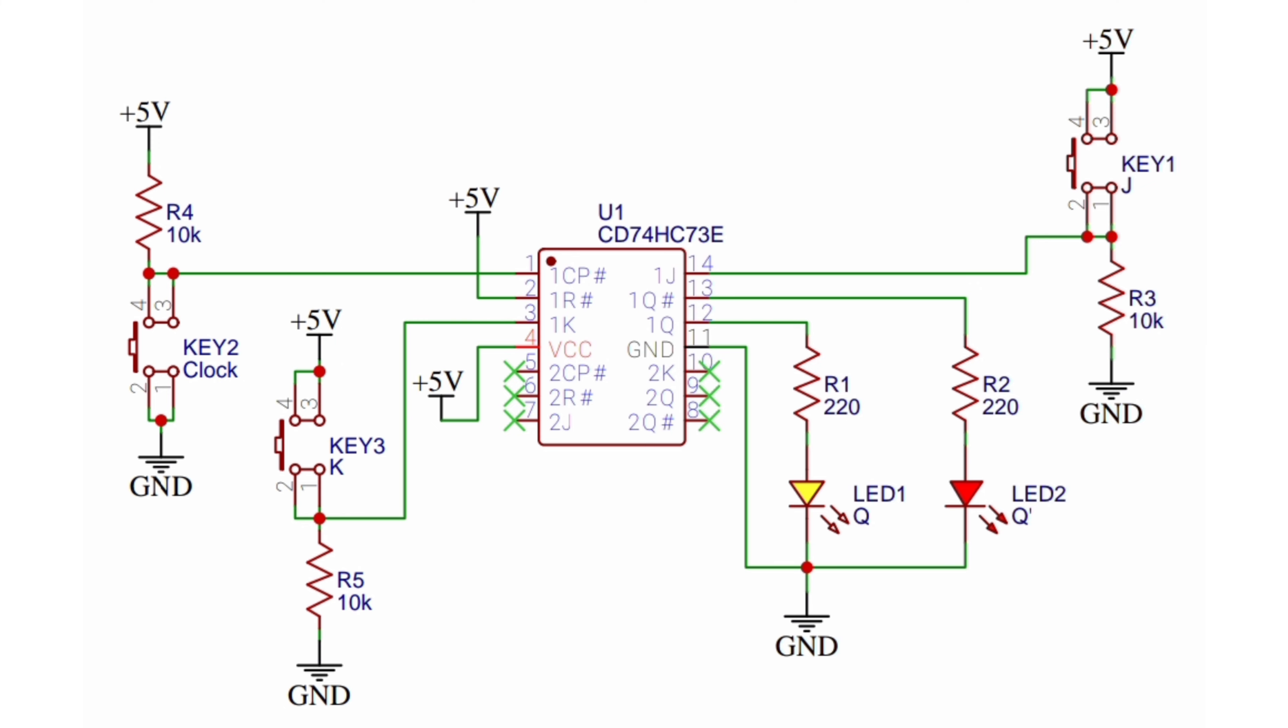The reset input of the first JK flip-flop is connected to positive 5 volts. Two LEDs are connected to the outputs of the first JK flip-flop to indicate its outputs. The yellow LED will indicate the Q output.